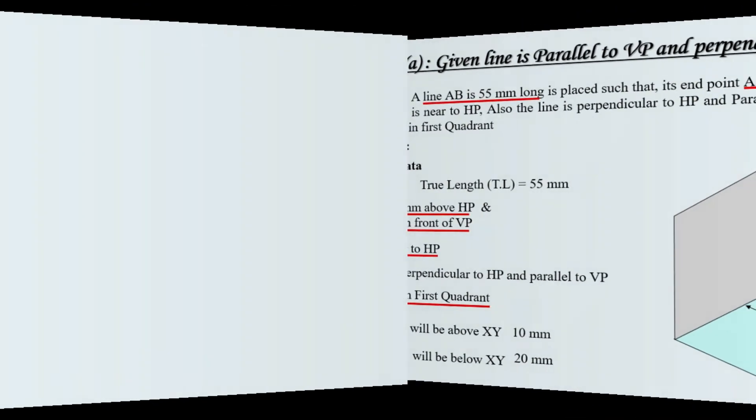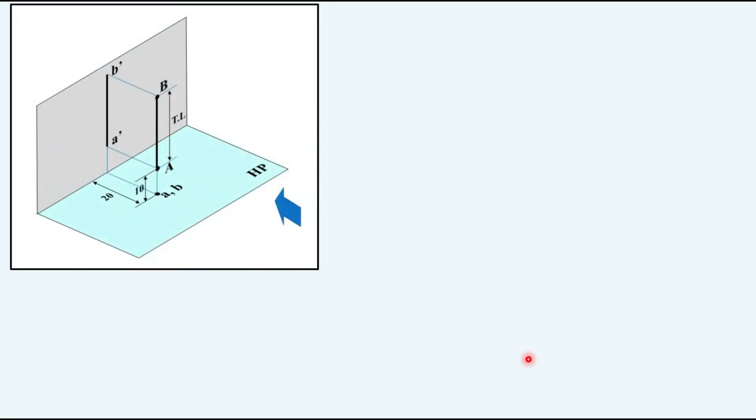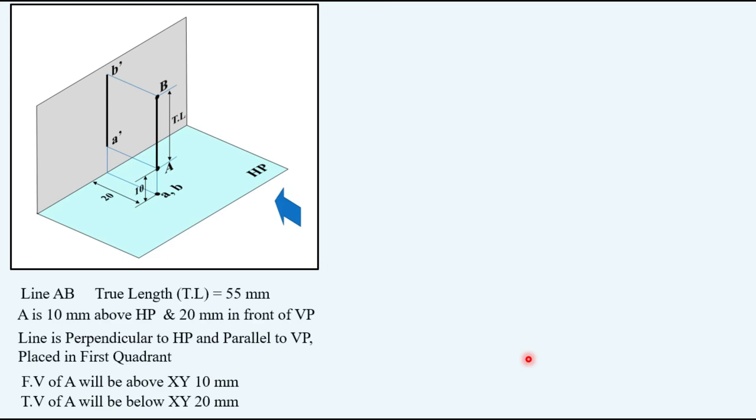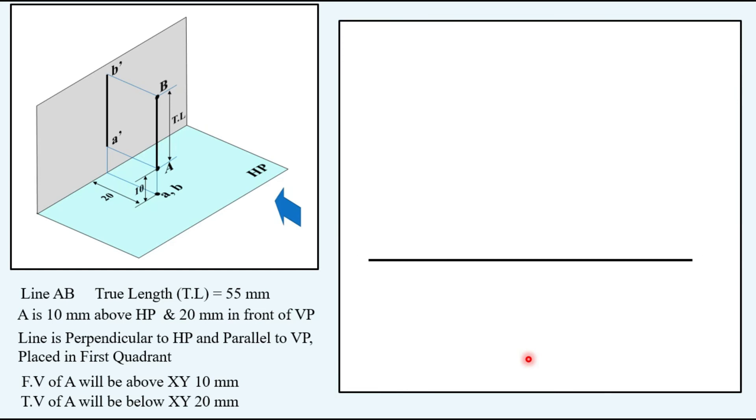Let's draw the actual solution now in two dimensions. Keeping this with us for reference and this is the given data we have. Starting with the first, that is XY line, then a vertical projector. Starting with the front view first, so we have to take 10 mm above and you have to locate a point A'. From here we have to take the true length that is 55 mm in this question and locate another end of the line that is B'. A' and B' should be joined; that will be our front view.